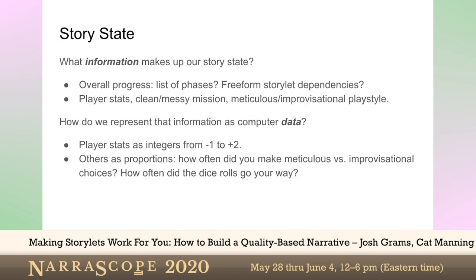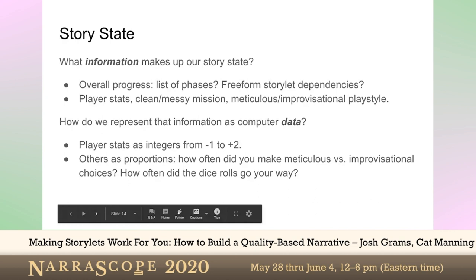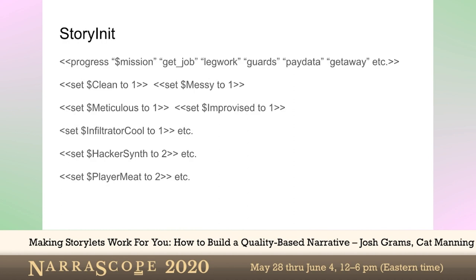So to set those up in Twine: the first one, this progress macro is something I've written for TinyQBN that lets you keep a progress indicator as a list of named states. In StoryNexus you basically just have integers, so if you want a progress indicator as a number, you have to keep track of what each number means, and if you want to insert something in the center you have to renumber all the things. With this macro, you can just say: give a variable name, we're going to call this 'mission,' and then list the phases — first you have to get the job, then do the legwork, then get past the guards, then hack in and get the pay data, then get out, and so on. We have ways to just advance that easily. You can name them, refer to them by name. If you need to insert or delete in the middle, it's no big deal.